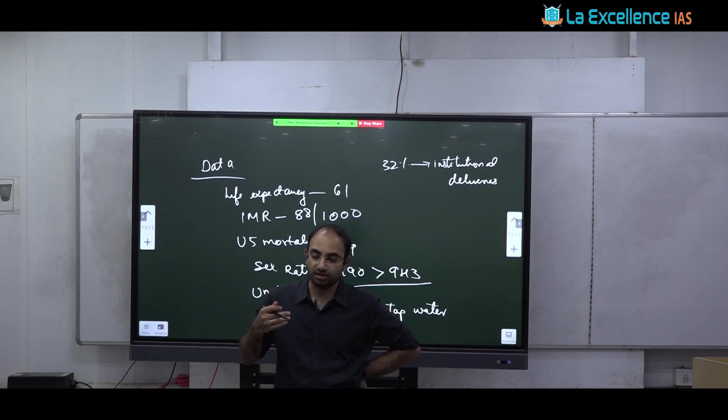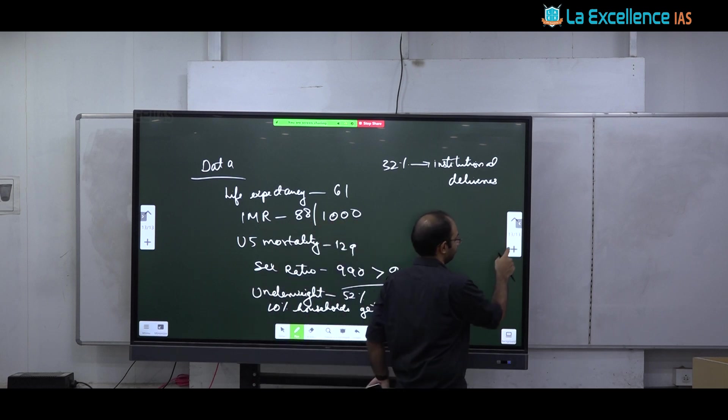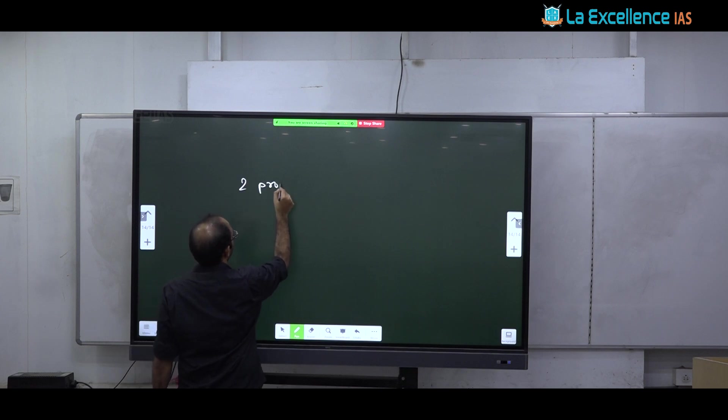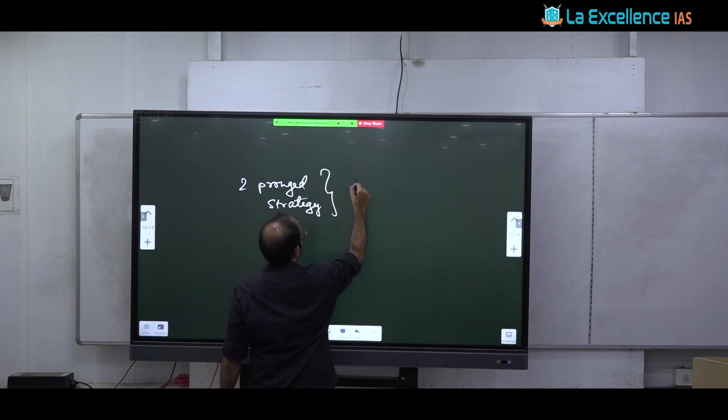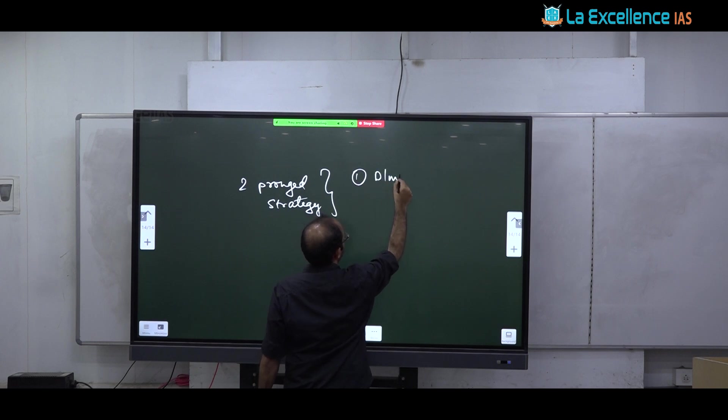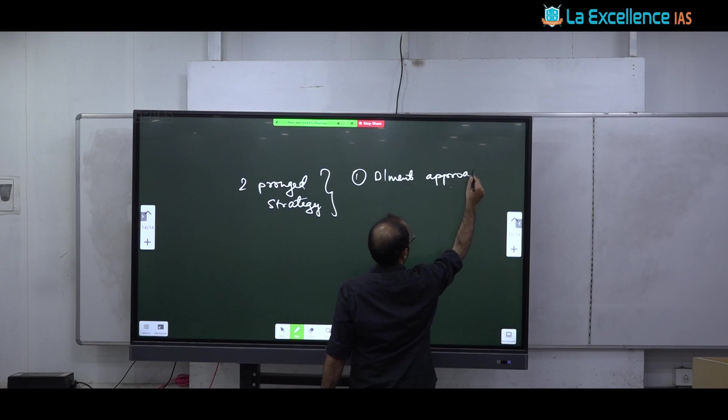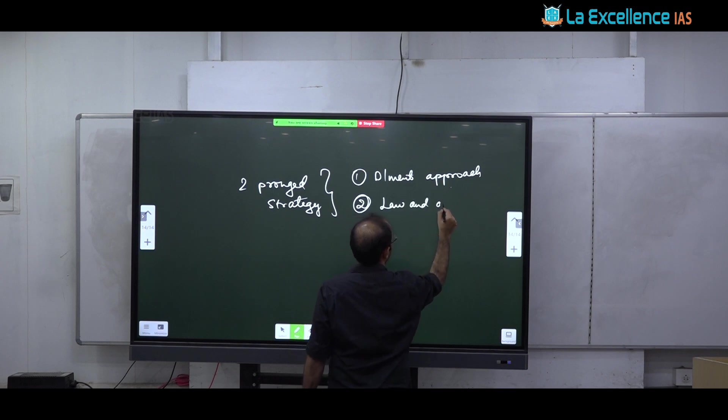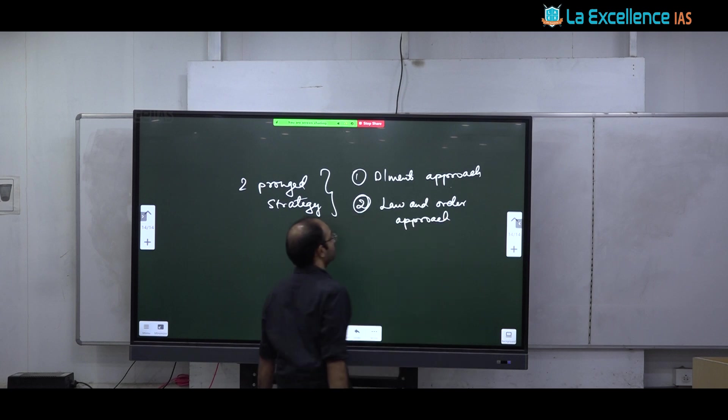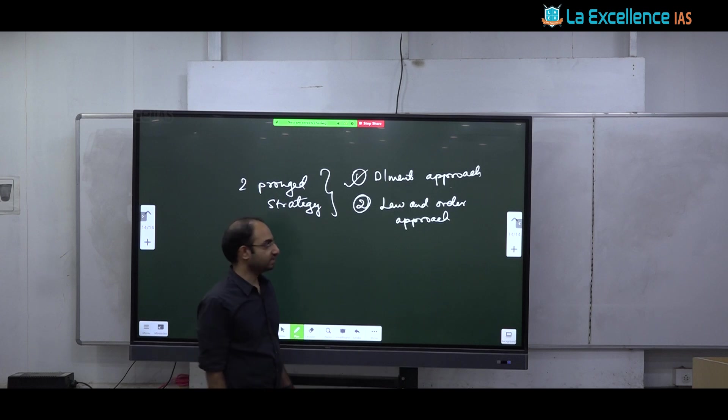Way forward, in way forward you can mention about two-pronged strategy. One is development approach. Second is law and order approach. One is development approach, second is law and order approach. In development approach, you can talk about providing better facilities. Second law and order, of course, you must increase security network. And here you can cite AP model. How in Andhra Pradesh model is cited as a best practice? In AP, they have done this to reduce the nuxtual footprint.